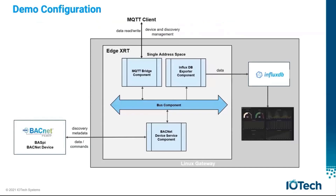This slide provides a pictorial representation of the demo configuration. The XRT deployment, which is running as a native executable, consists of three standard components: a BACnet device service component to provide connectivity to the BASPi BACnet device, an MQTT bridge component which is used to support the standard management API, and an InfluxDB exporter component which is used to write the BACnet device data to a local InfluxDB database instance. All of the demo is running on a Linux Edge gateway connected to the BACnet device over TCP/IP.